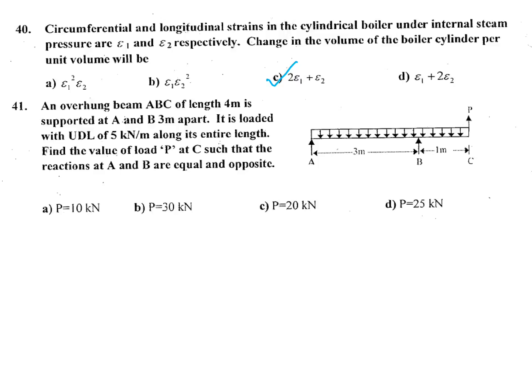Next, an overhung beam ABC of length 4 meters is supported at A and B, 3 meters apart. It is loaded with UDL of 5 kN per meter along its entire length. Find the value of load P at C such that the reactions at A and B are equal and opposite.